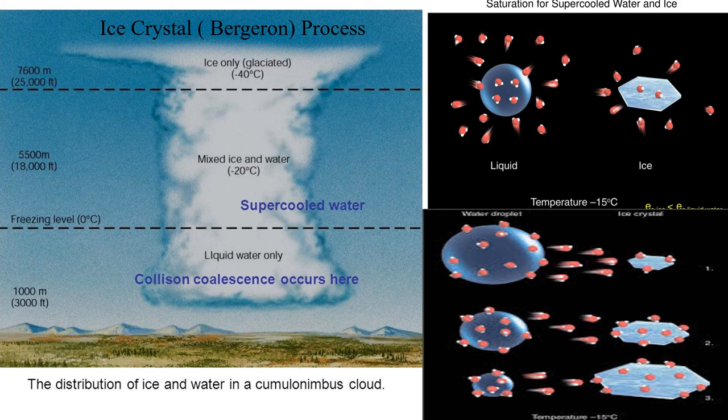Just as liquid cloud droplets form on condensation nuclei, ice crystals may form in sub-freezing air on particles called ice nuclei. The number of ice-forming nuclei available in the atmosphere is small, especially at temperatures above minus 10 degrees centigrade. However, as temperature decreases, more particles become active and promote freezing.